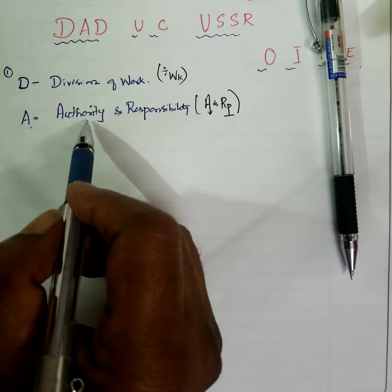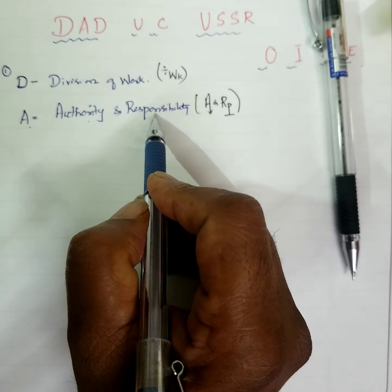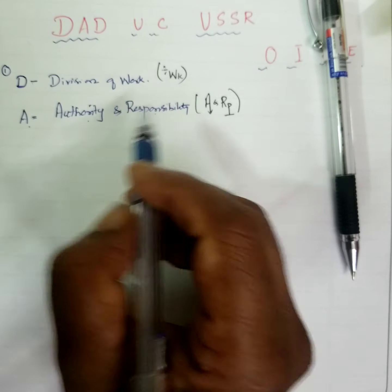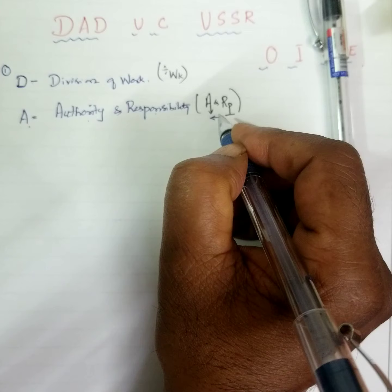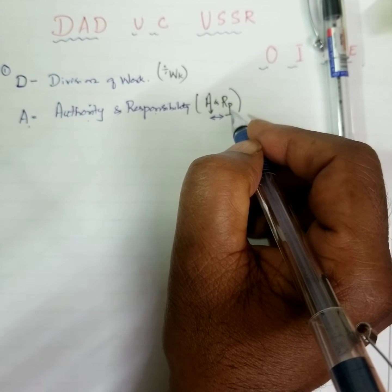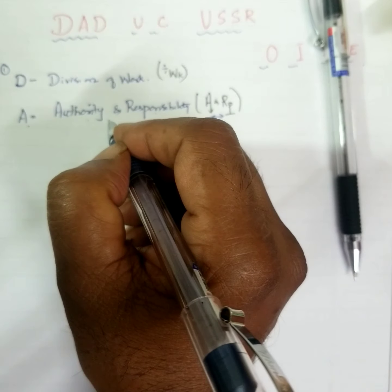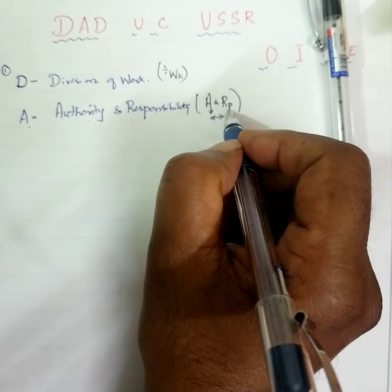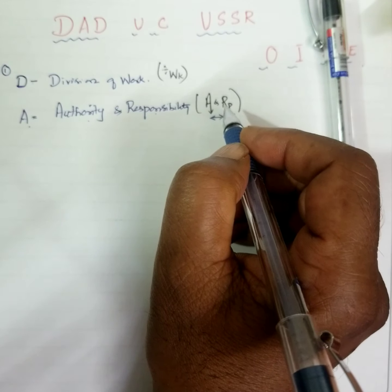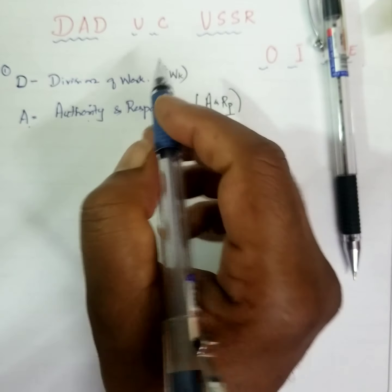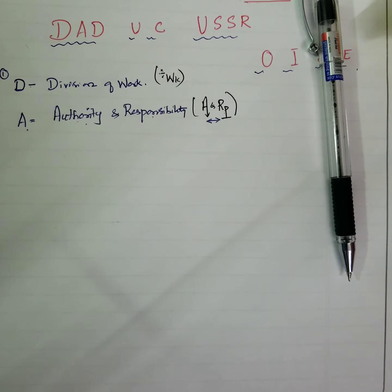A stands for authority and responsibility. There should be a balance between authority and responsibility. Excess of authority may lead to misuse of power. Responsibility without authority may lead to slavery. Therefore, you have to remember authority and responsibility should be equally balanced.